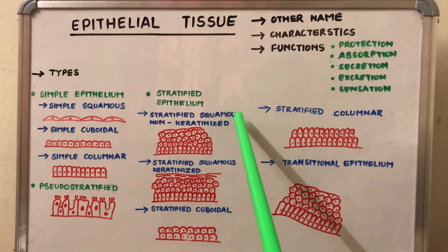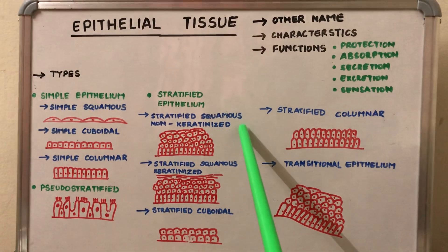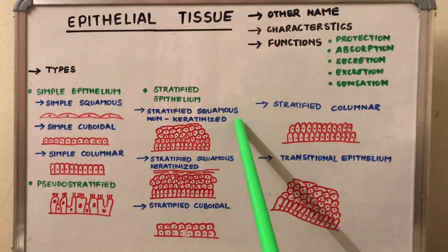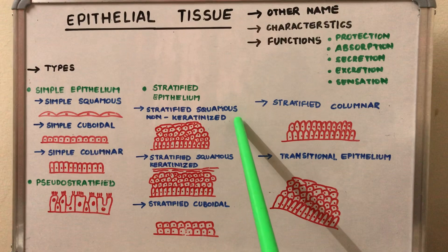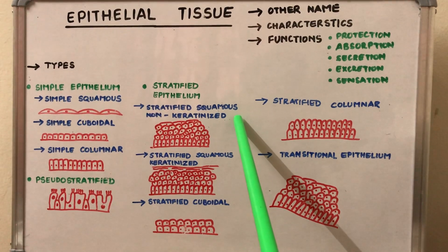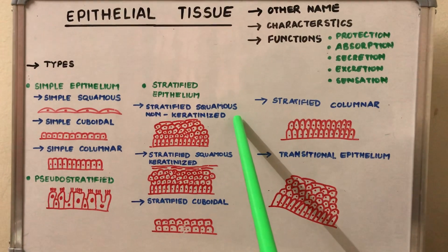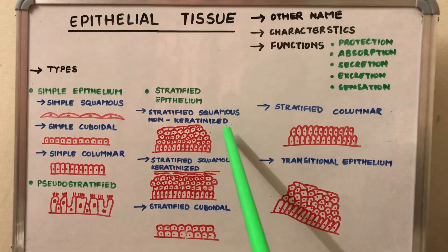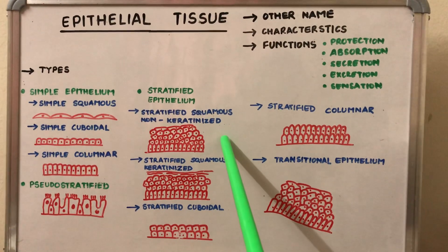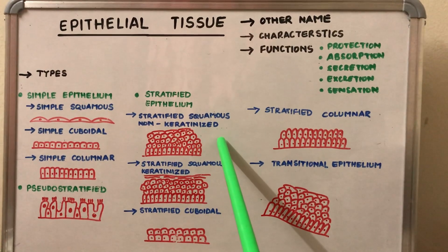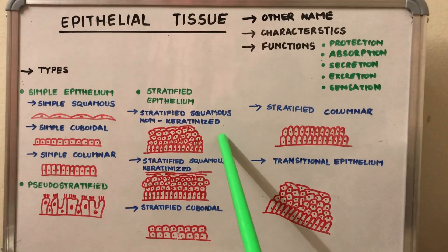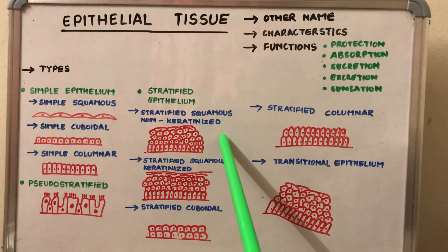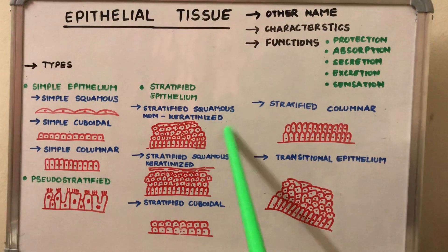This type of epithelium is present in the oral cavity of human beings. It is also present in the tongue, tonsils, pharynx, and esophagus.